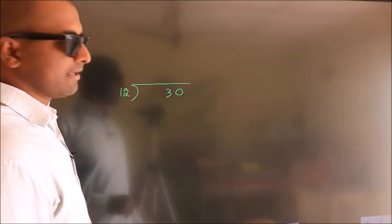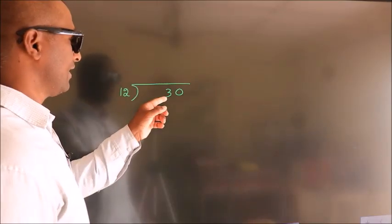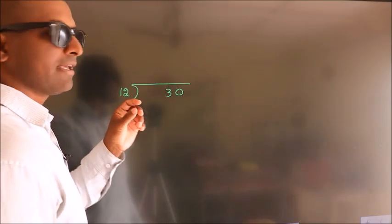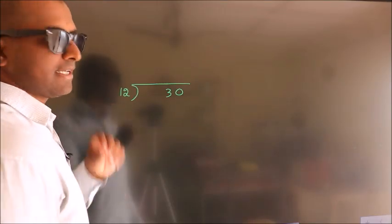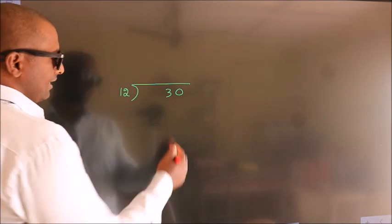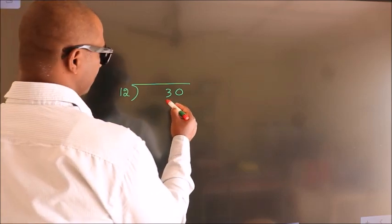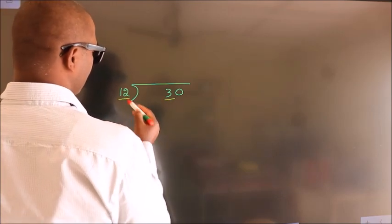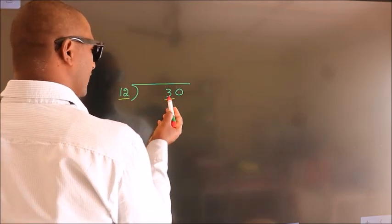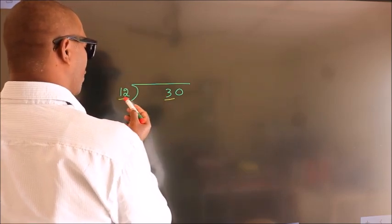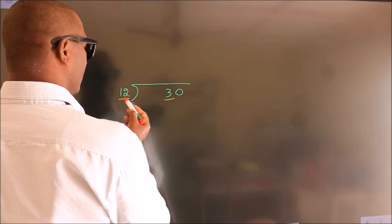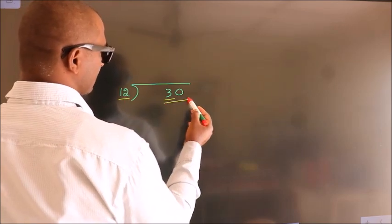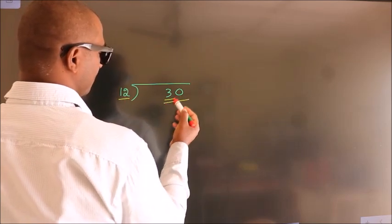How to divide 30 by 12? Here we have 3, and here 12. Since 3 is smaller than 12, we should take two numbers: 30.